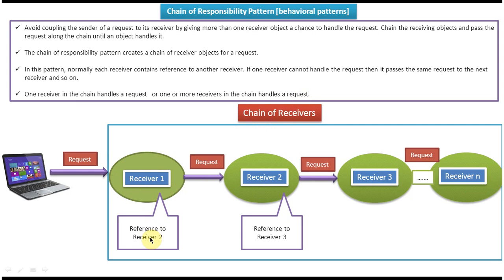Receiver one has a reference to receiver two, and receiver two has a reference to receiver three, and so on. That is how you can chain multiple receivers to make a chain of receivers. The client sends a request to the chain of receivers, and in the chain the first receiver is receiver one. So the request first comes to receiver one.